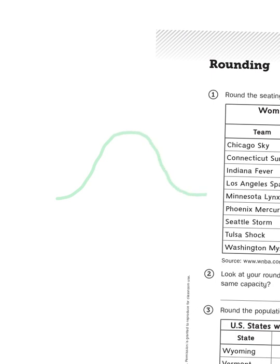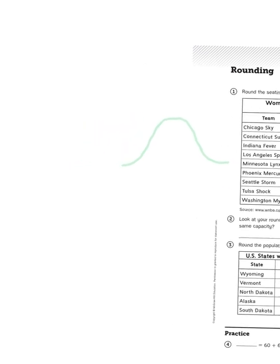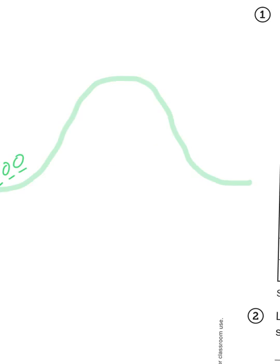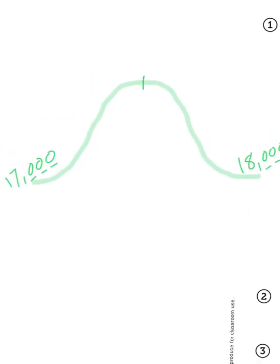Let's look at the first number. The Chicago Sky can hold 17,500. I need to know: is that closer to 17,000 or 18,000? On the left-hand side I'll write 17,000, and on the right-hand side on the other end of that hill I'll write 18,000. The halfway point between 17,000 and 18,000 is going to be a number that starts with 17,000 but has a five in it — 500.